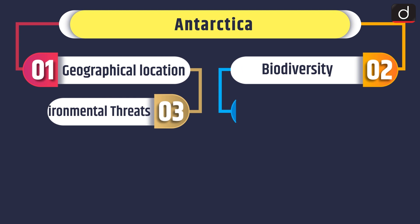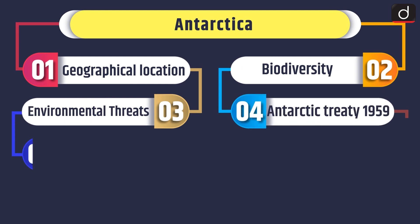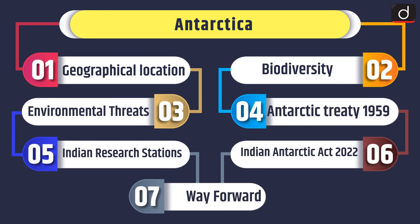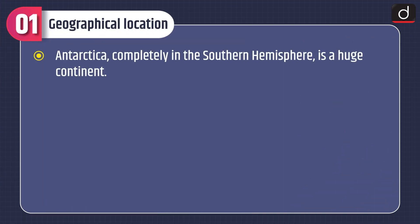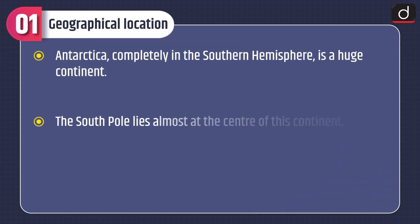Hello and welcome to Mind Map. Today's topic of discussion is Antarctica. We will have a look at the geographical location of Antarctica, then discuss its biodiversity, environmental threats, Antarctic Treaty 1959, Indian research stations, Indian Antarctic Act 2022, and the way forward.